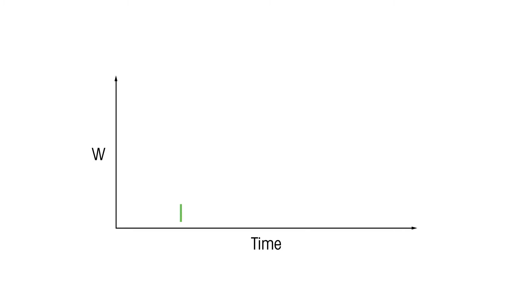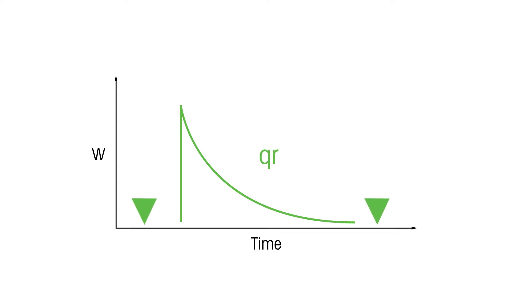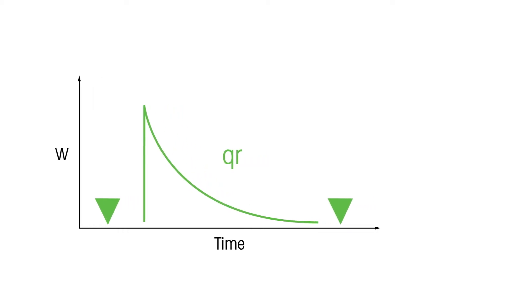Because the heat transfer coefficient and the wetted area may change in the course of the reaction, the conversion factor occasionally needs to be determined when the properties of the reaction mass are changing. This is done preferably before and after the reaction.